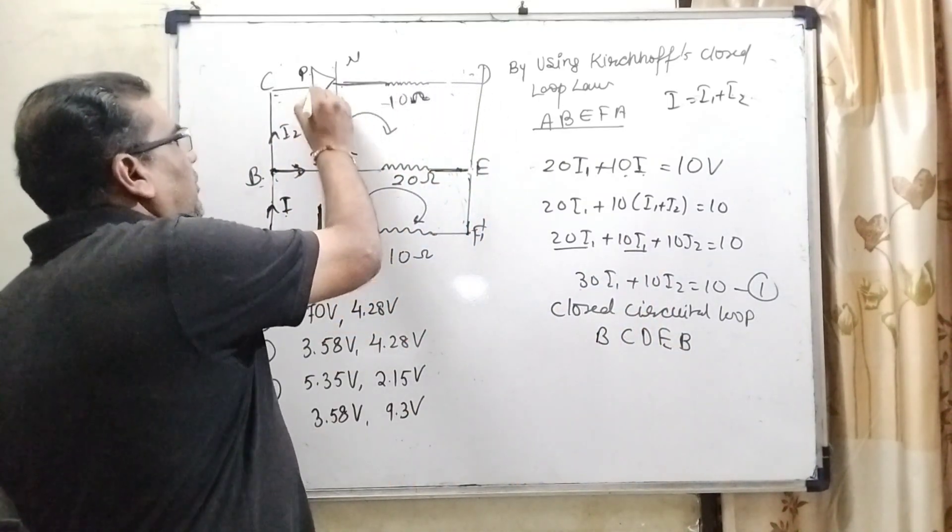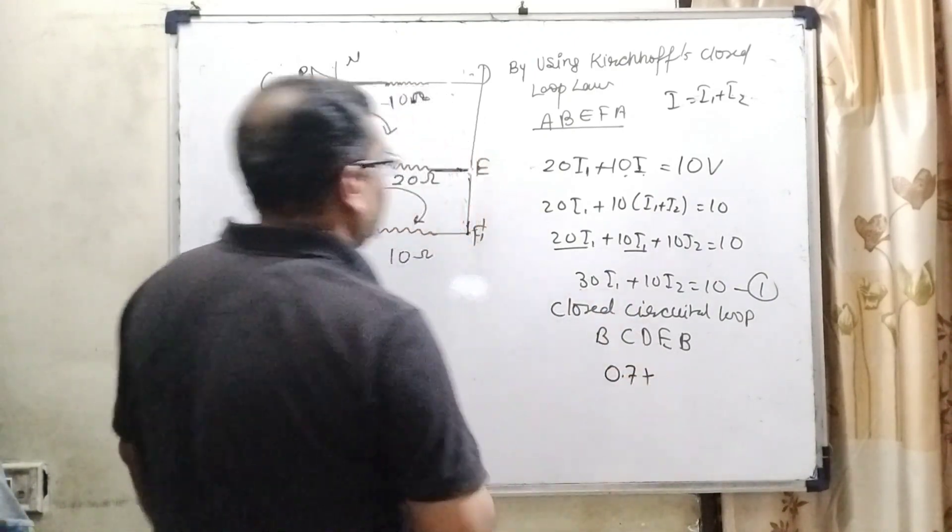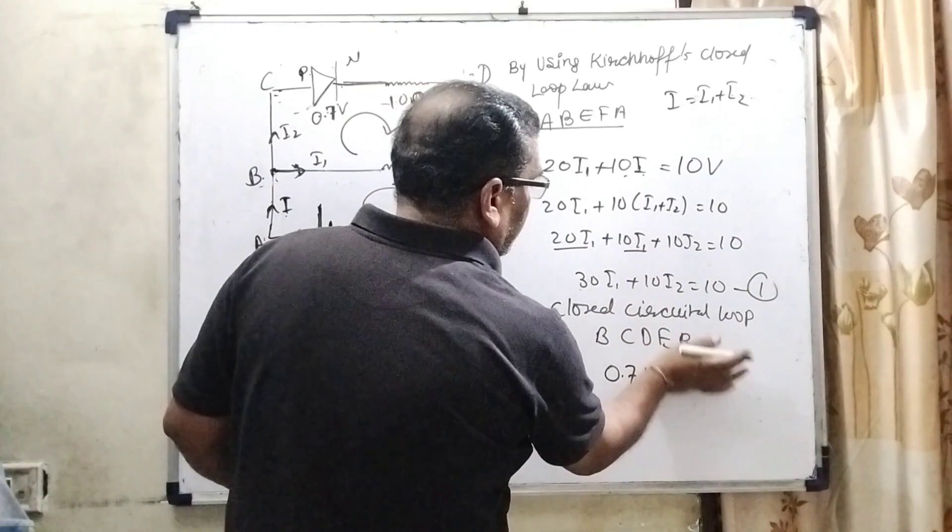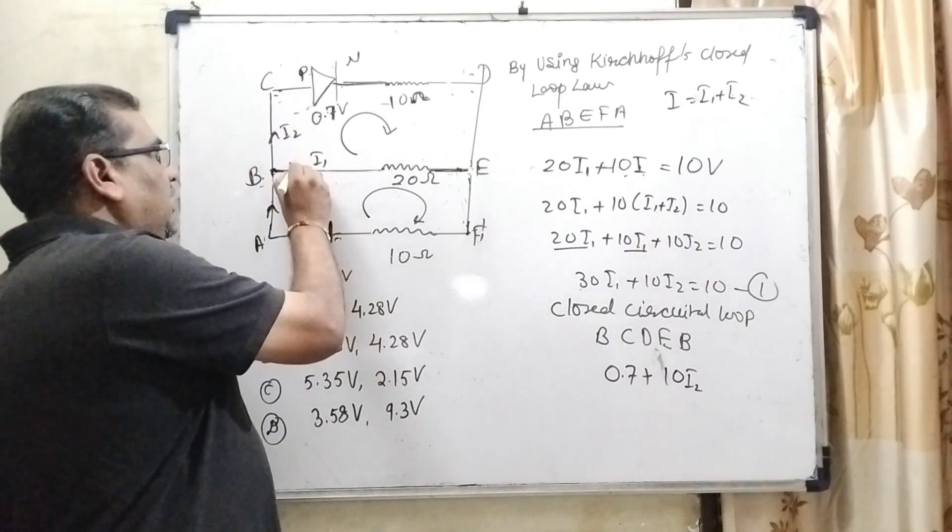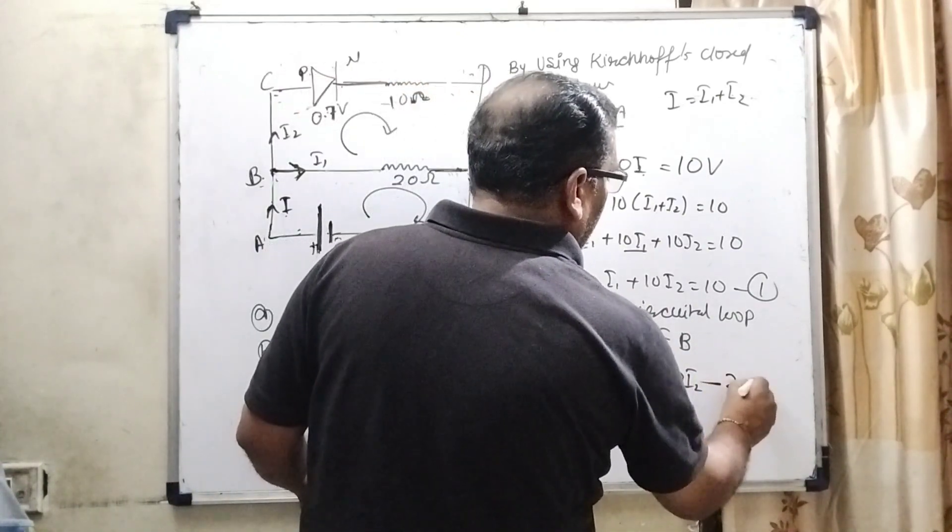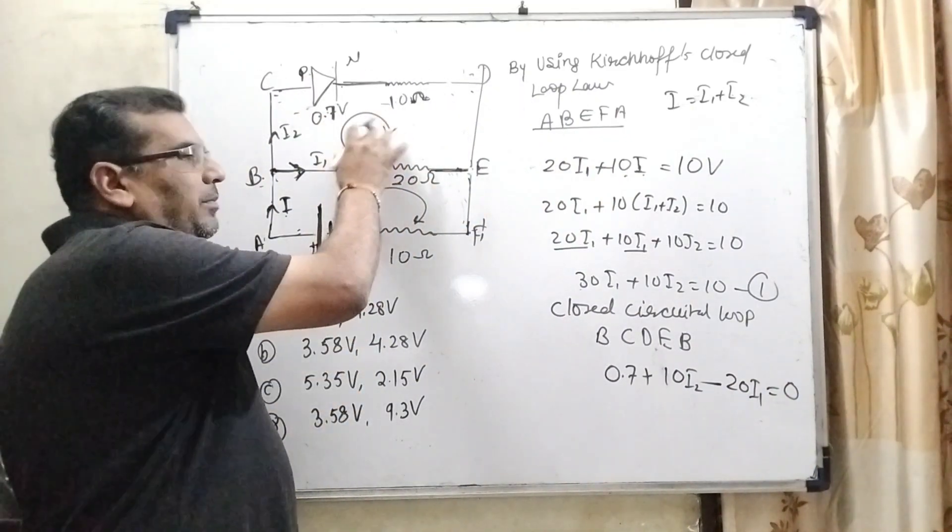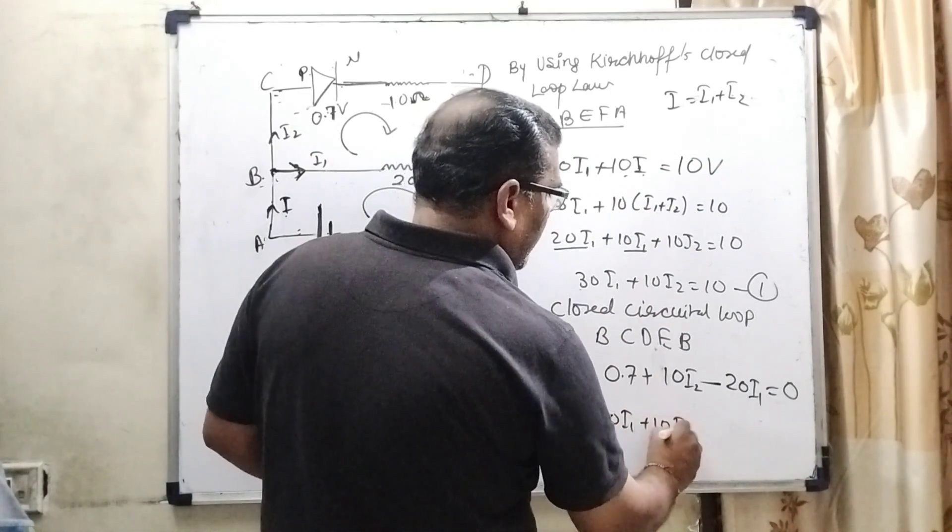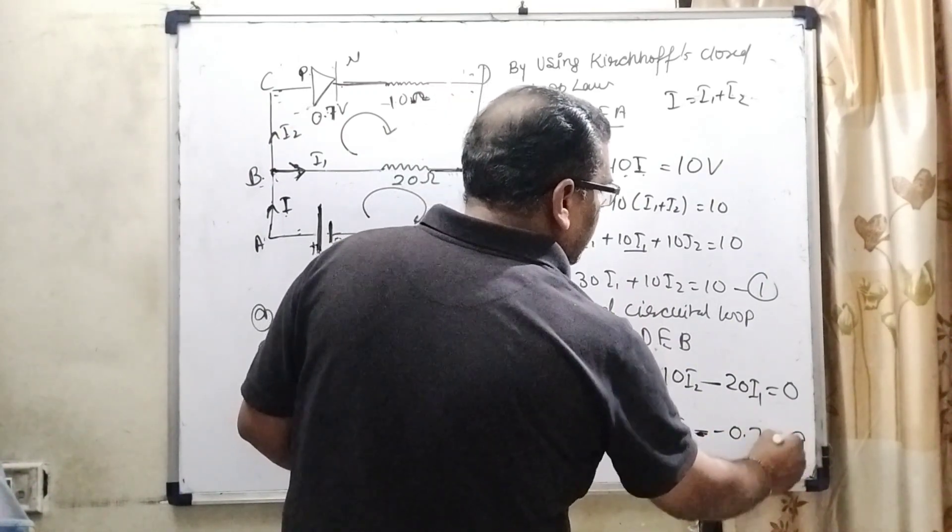So here, here is the potential drop, not EMF. Remember, it is only potential drop, not EMF. So here we have written 0.7 as it is plus. And now the current passing through C to D, that is I2. So here 10 and multiply with I2. Now we have to move from E to B and the direction of current is B to E. So therefore we use sign convention minus 20 and here I1 equals 0 because there is no battery source present here. So therefore we put here 0. So minus 20I1 plus 10I2, and transposing to the right side it becomes 0.7. It is the second equation.